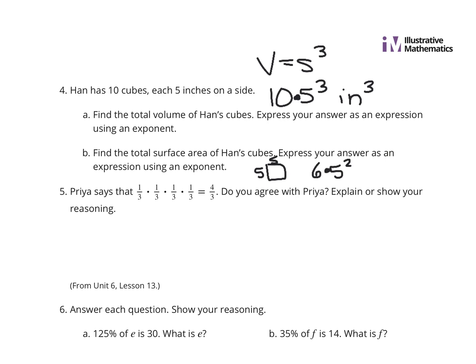So 6 times 5 squared is the surface area of just one cube. Now, there's 10 cubes. And so what you have here is you have 10 of these 6 times 5 squareds for these surface areas. And so what you end up with now is you can simplify this and actually take this all the way to 60 times 5 squared. You could leave it as 10 times 6 times 5 squared if you really wanted to, but your units here are going to be square inches, inches squared.